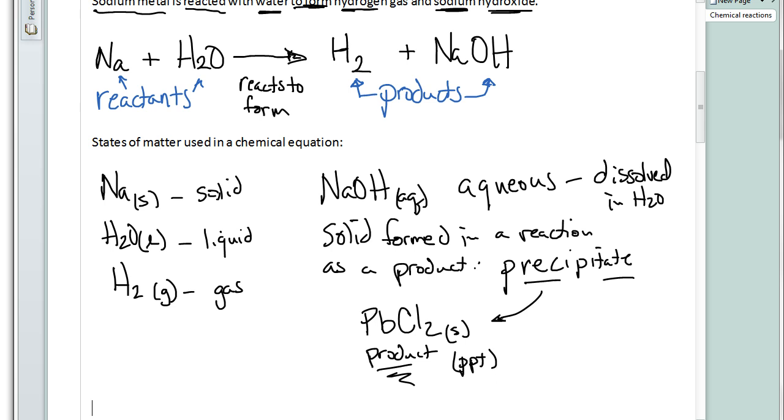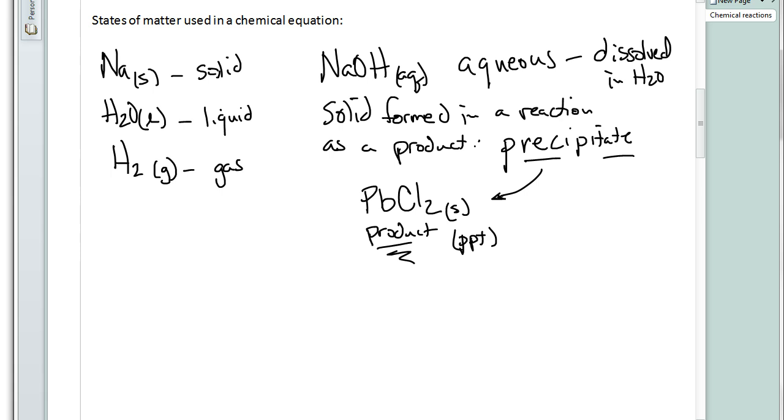Something else that we can talk about with respect to looking at chemical reactions. Let's say we have a reaction that looks like this: H2O2, which is hydrogen peroxide. Hydrogen peroxide is the stuff that comes in that brown bottle. You might have some in your house. You fall down and you skin your knee, you might put some hydrogen peroxide on it to help clean it out. It decomposes into water and it decomposes into oxygen gas.